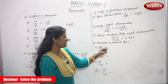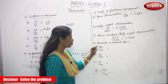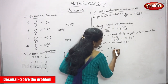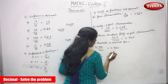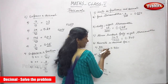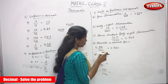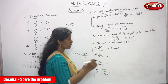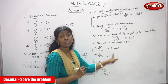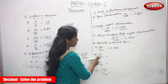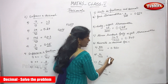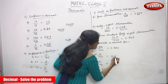Rewrite in decimal form. The fraction is 950 by 1000. There are 3 zeros in the denominator and 3 digits in the numerator. Moving 3 digits from right to left — 1, 2, 3 — then put a point, then write 0. The answer is 0.950. For the next fraction, 30 by 1000: 3 zeros but only 2 digits in the numerator, so you need 1 more zero. The answer is 0.030.